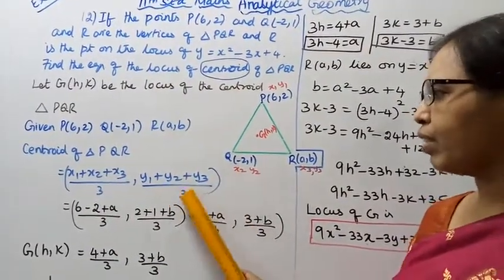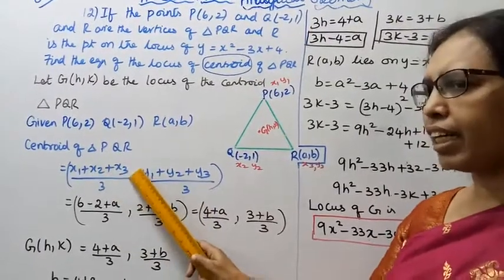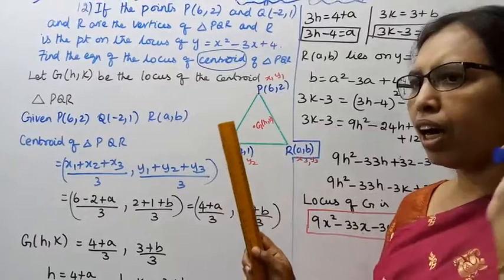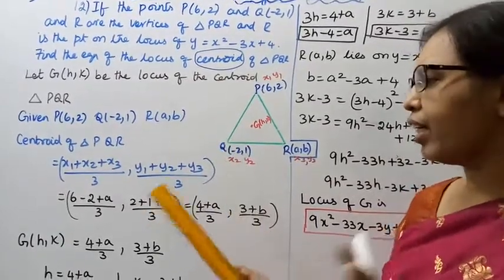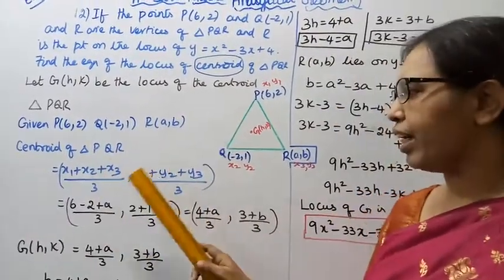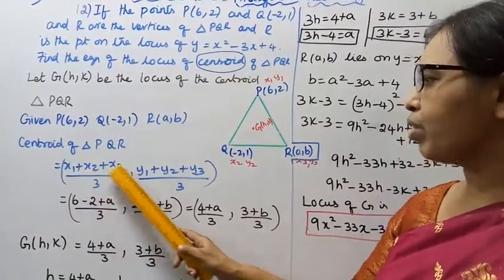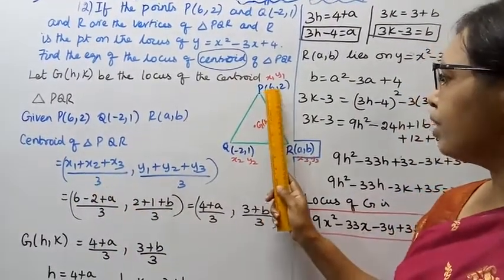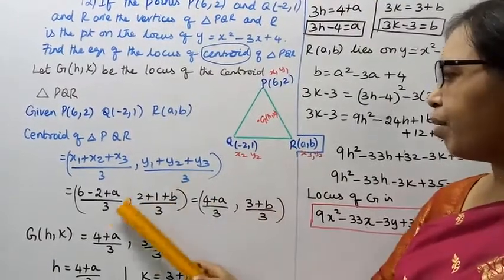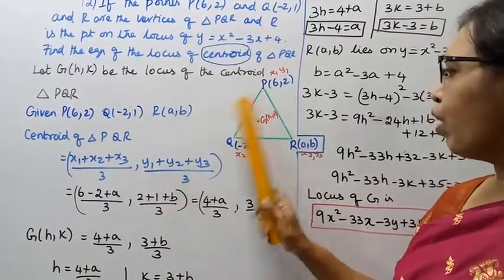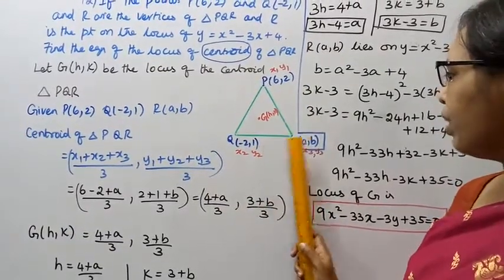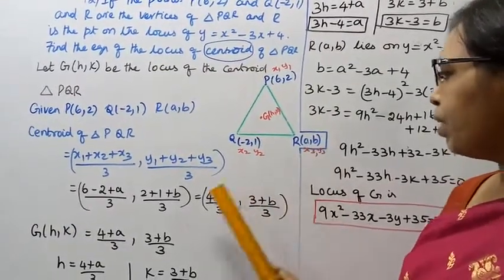Key points are: centroid, distance formula, section formula. Let R be (a, b). Then x-coordinate of centroid: x1 plus x2 plus x3 by 3 equals 6 minus 2 plus a by 3. y-coordinate: y1 plus y2 plus y3 by 3 equals 2 plus 1 plus b by 3.